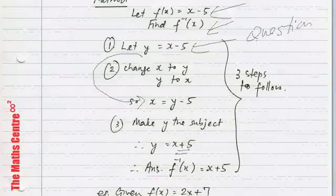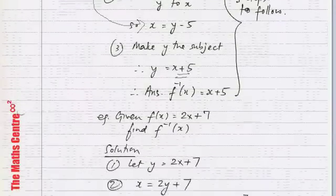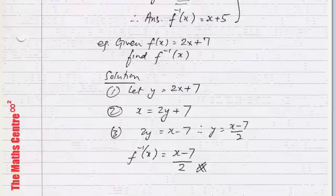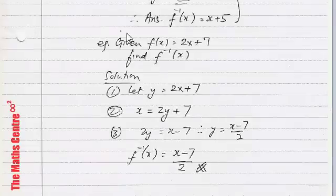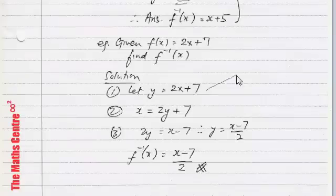If we are given, f(x) equals to 2x plus 7. And you have to find f inverse x. So, remember, first step is to write y equals to 2x plus 7. Next step is to change the y to x and the x to y. I've done that for you.